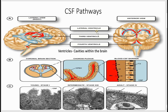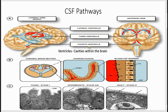There are lateral ventricles — C-shaped ventricles present in each cerebral cortex. There is the third ventricle, located just above the brainstem, which is funnel shaped. The next is the fourth ventricle, which is diamond shaped and runs along the brainstem. So there are lateral ventricles, third ventricle, and fourth ventricle.